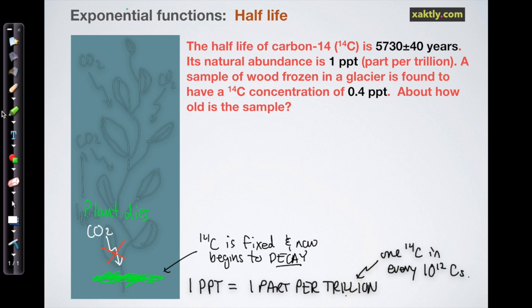So let's imagine how we can use this. Imagine that we've found a sample of wood from a glacier. It's been frozen for a long time. And we measure the amount of carbon-14 in it, and we find that instead of one part per trillion, we only have 0.4 parts per trillion. Well we can make use of that to determine the age of the tree.